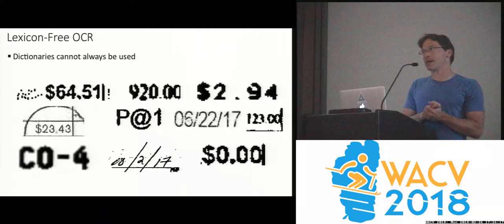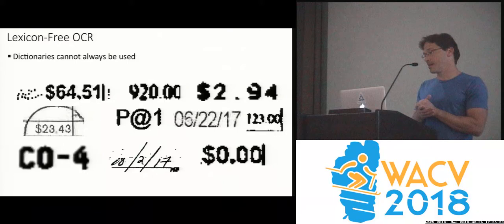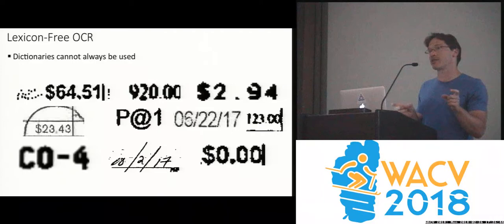In OCR, you can many times use the lexicon to see whether what you read applies to it. But when reading numbers from bank checks, you can't use any lexicon — you are just reading digits. For dates you have some rules, but in general the space is very broad.